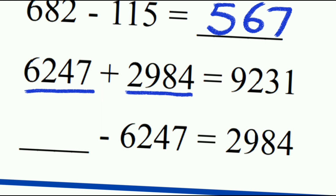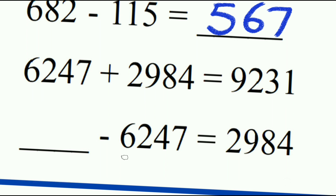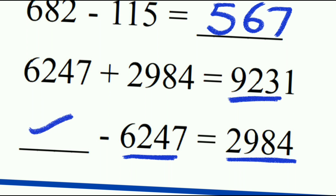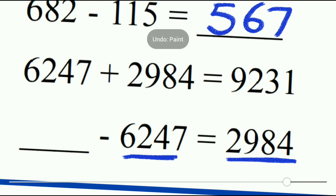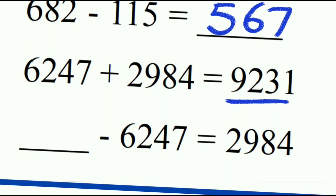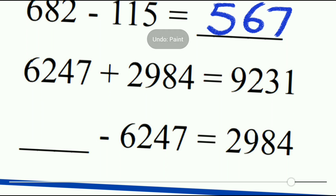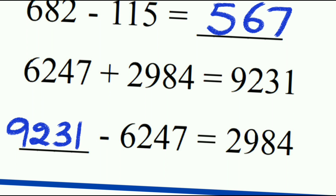Next: 6247 plus 2984 — two numbers given. The total sum is 9231. We have to fill the blank — here we need to write the total sum from which we subtract one addend to find the other. The total sum of these two addends is 9231, so we write 9231. This confirms our rule: subtracting one addend from the total sum gives the remaining addend.